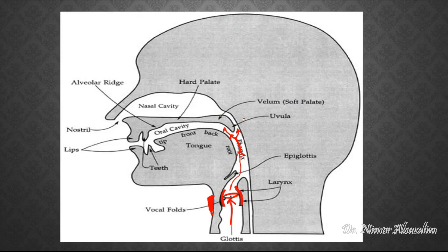Sounds can also be modified at the velum or this area. The back of the tongue would raise up to constrict the airflow moving out through your pharynx. The location where this happens is at the velum, or the soft palate. This is why we call K, G, and ING velar sounds.